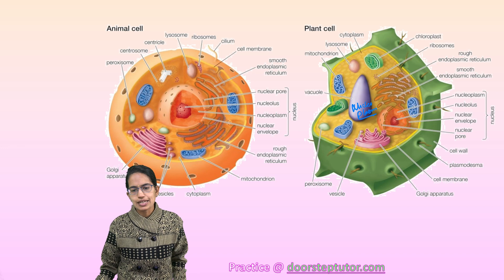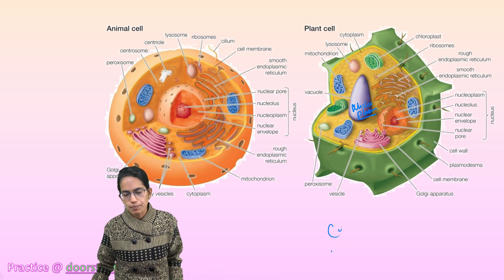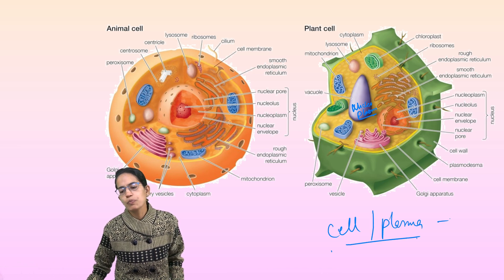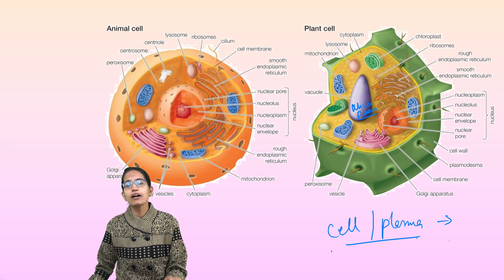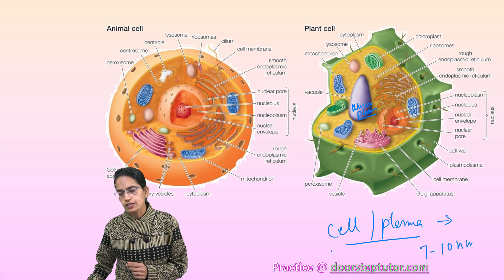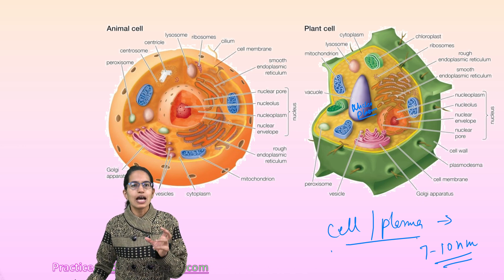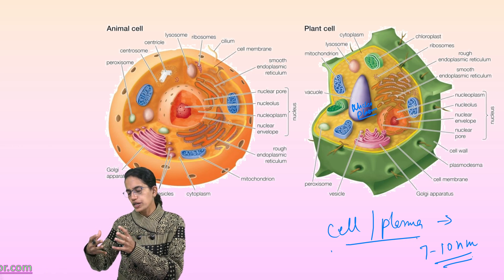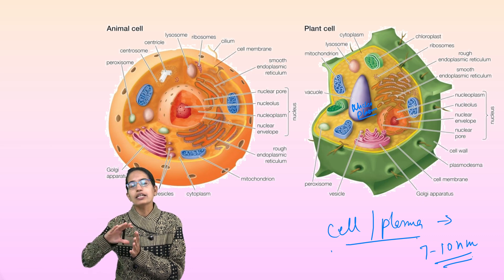Protoplasm is a jelly-like semi-fluid substance. Talking about cell membrane — it is also called plasma membrane. The most important thing is it is thin and selectively permeable, meaning it allows specific things to move inside the cell. It has a thickness of 7 to 10 nanometers seen under an electron microscope. It is made up of lipids and proteins, has semi-fluid content which binds the cell and gives the cell a definite shape.